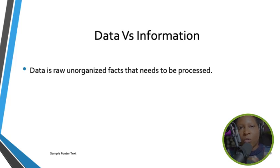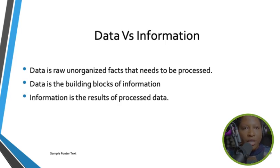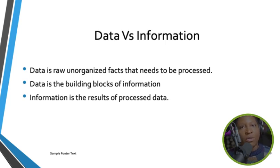Data is the raw, unorganized facts that need to be processed — it's the building block for information. Information is the result of processed data. So after you break down your data — putting employees on one side and customers on another — you then have organized information about each group.